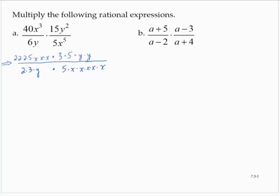We're allowed to remove any common factors between the numerator and denominator. I see a common factor of 2 — I can remove it. I see three common factors of x — I can remove them. I see a common factor of 3, a common factor of 5, and a common factor of y — I can remove those. And that's all I can remove.